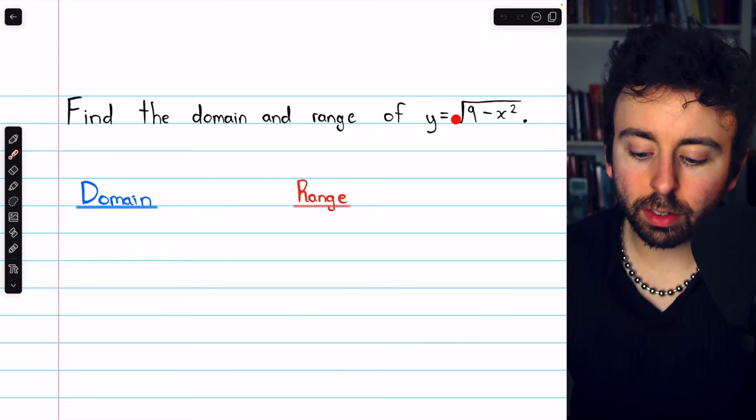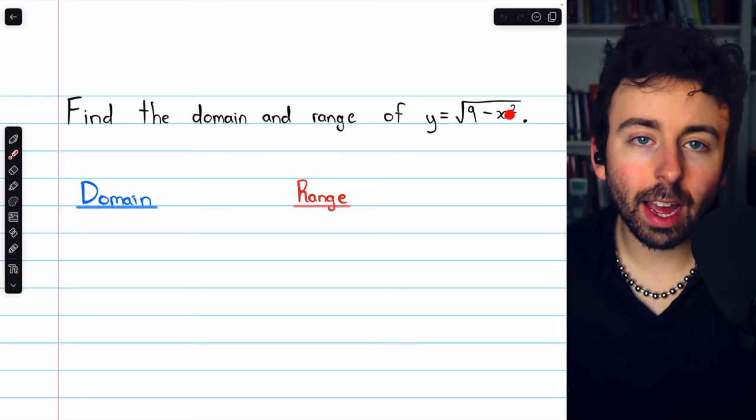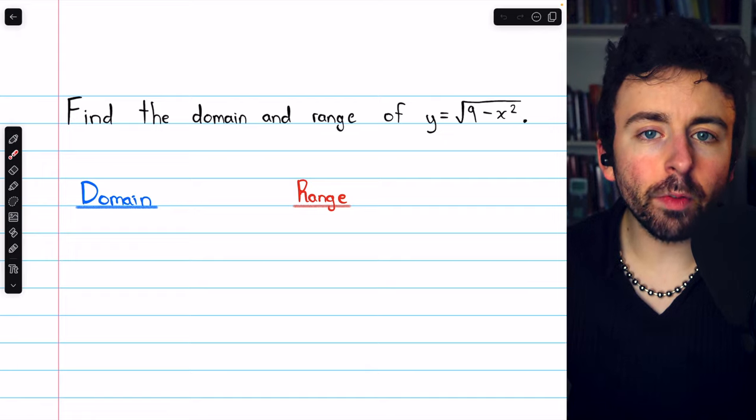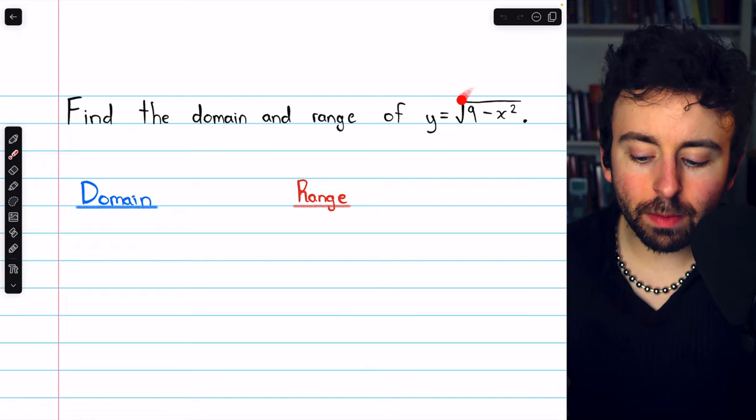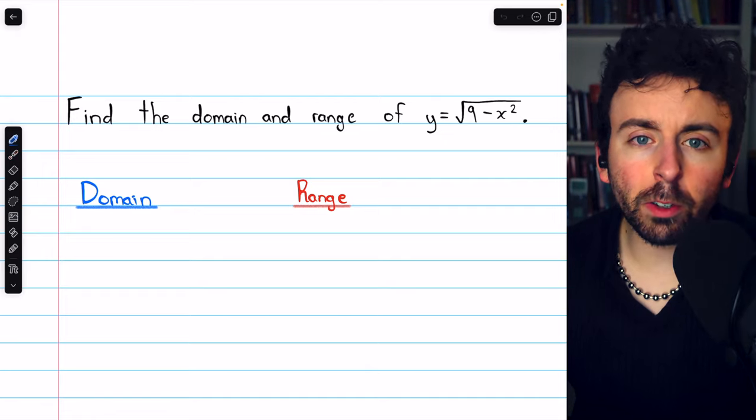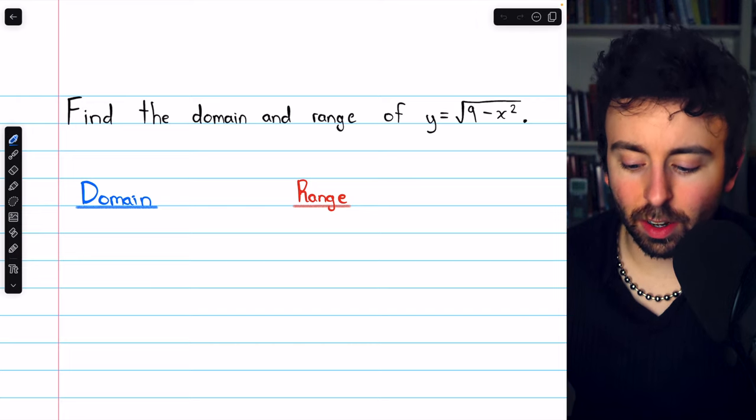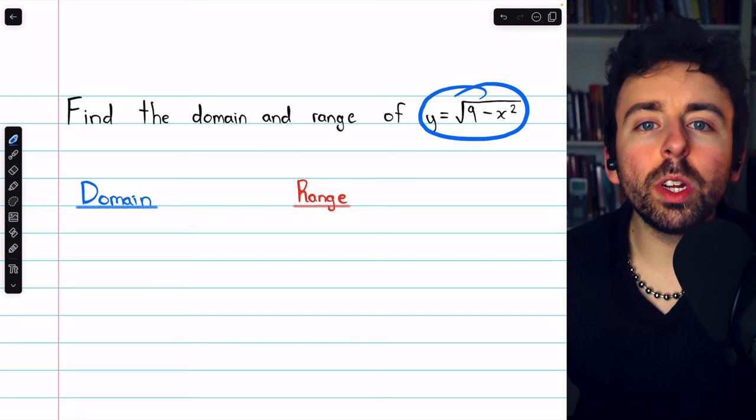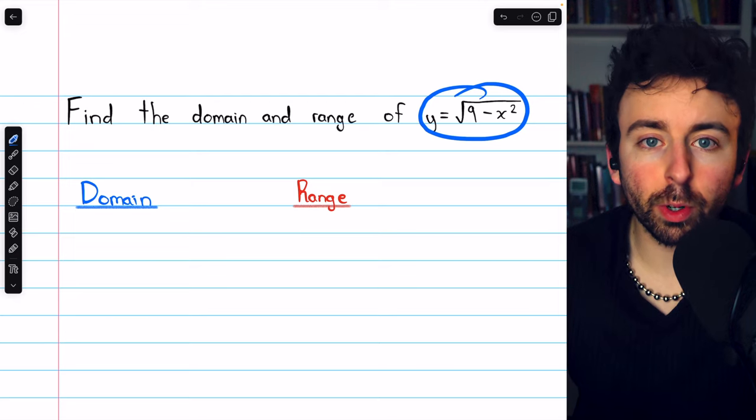The domain of y equals the square root of 9 minus x squared is the set of all x values that we can plug into the function. To figure out what that is, we must consider the operations in the function and which of those operations have restrictions.